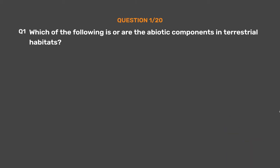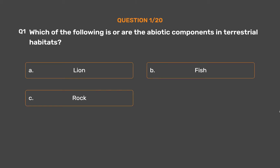Question number 1. Which of the following is or are the abiotic components in terrestrial habitats? Option A: Lion. Option B: Fish. Option C: Rock. Option D: Deer.